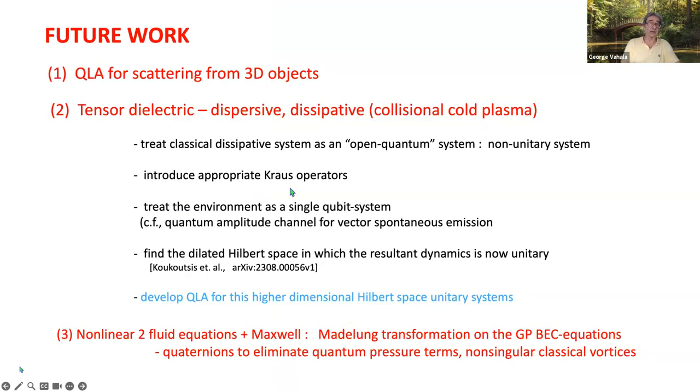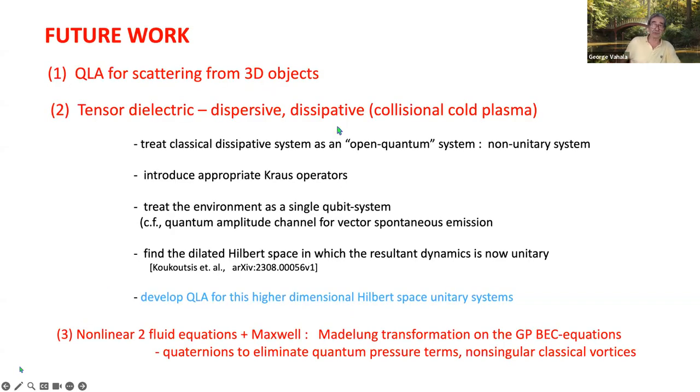So to summarize, we're now moving to scattering from 3D objects. The next stage is getting to be a more complicated dielectric, where you have both dispersion and dissipation. And you can still handle this. Because in quantum optics, they discuss quite often what are known as open quantum systems. And the system itself is non-unitary. But you can embed it into a high-dimensional space where it is unitary. And it's called Kraus operators. It's one way of doing it.